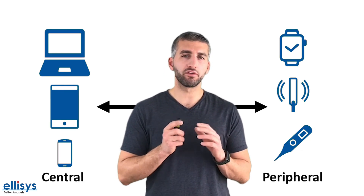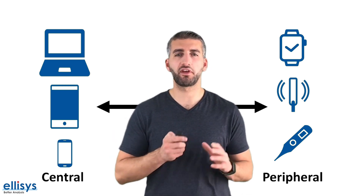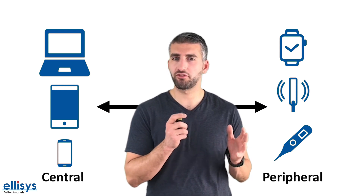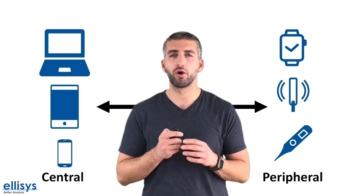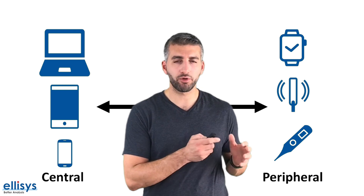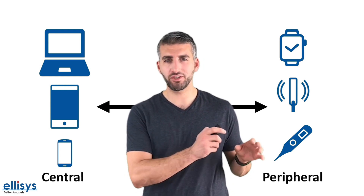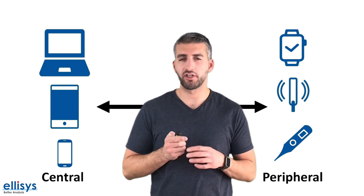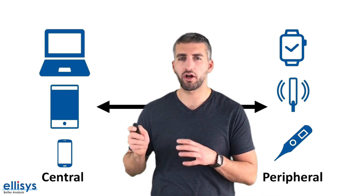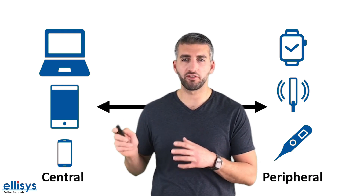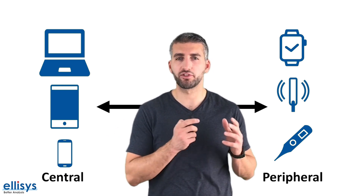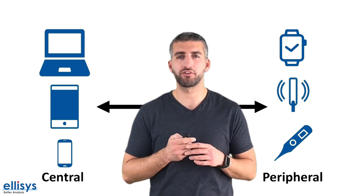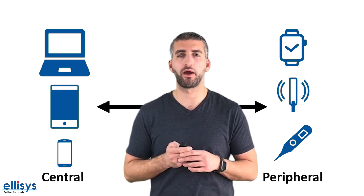In BLE, there are two kinds of devices: a central device and a peripheral device. The central device is usually the more capable device in terms of CPU power, memory, or battery capacity, whereas the peripheral device is much more resource-constrained, especially when it comes to the battery. BLE is an asymmetric technology, meaning much of the heavy lifting and processing responsibility is put on the central device, which allows the peripheral device to sleep for longer periods of time, turn off the radio, and consume less power.